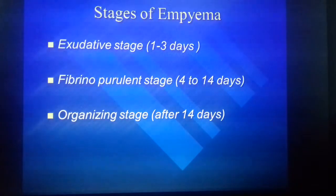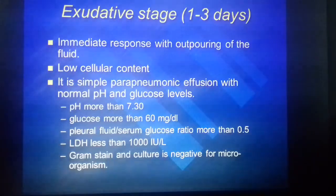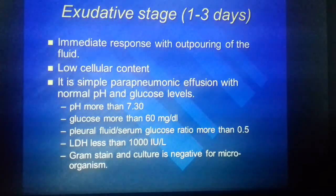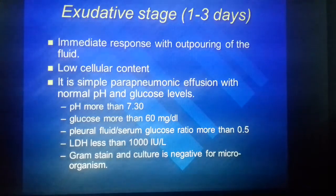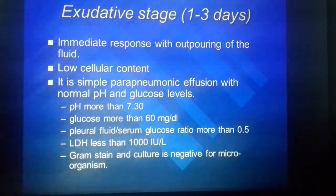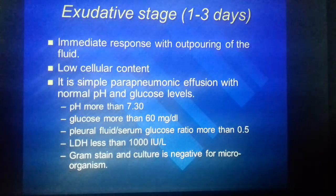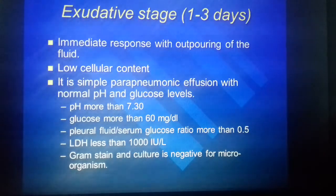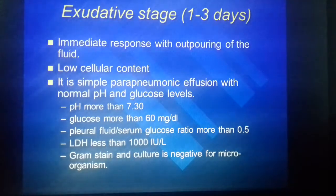Stages of empyema: exudative stage, fibrinopurulent stage, and organizing stage. In the exudative stage, there is immediate response with outpouring of fluid and low cellular content. It is a simple para-pneumonic effusion with normal pH and glucose levels - pH more than 7.3, glucose more than 60, fluid-to-glucose ratio more than 0.5, LDH less than 1000. Gram stain and culture is negative for microorganisms.